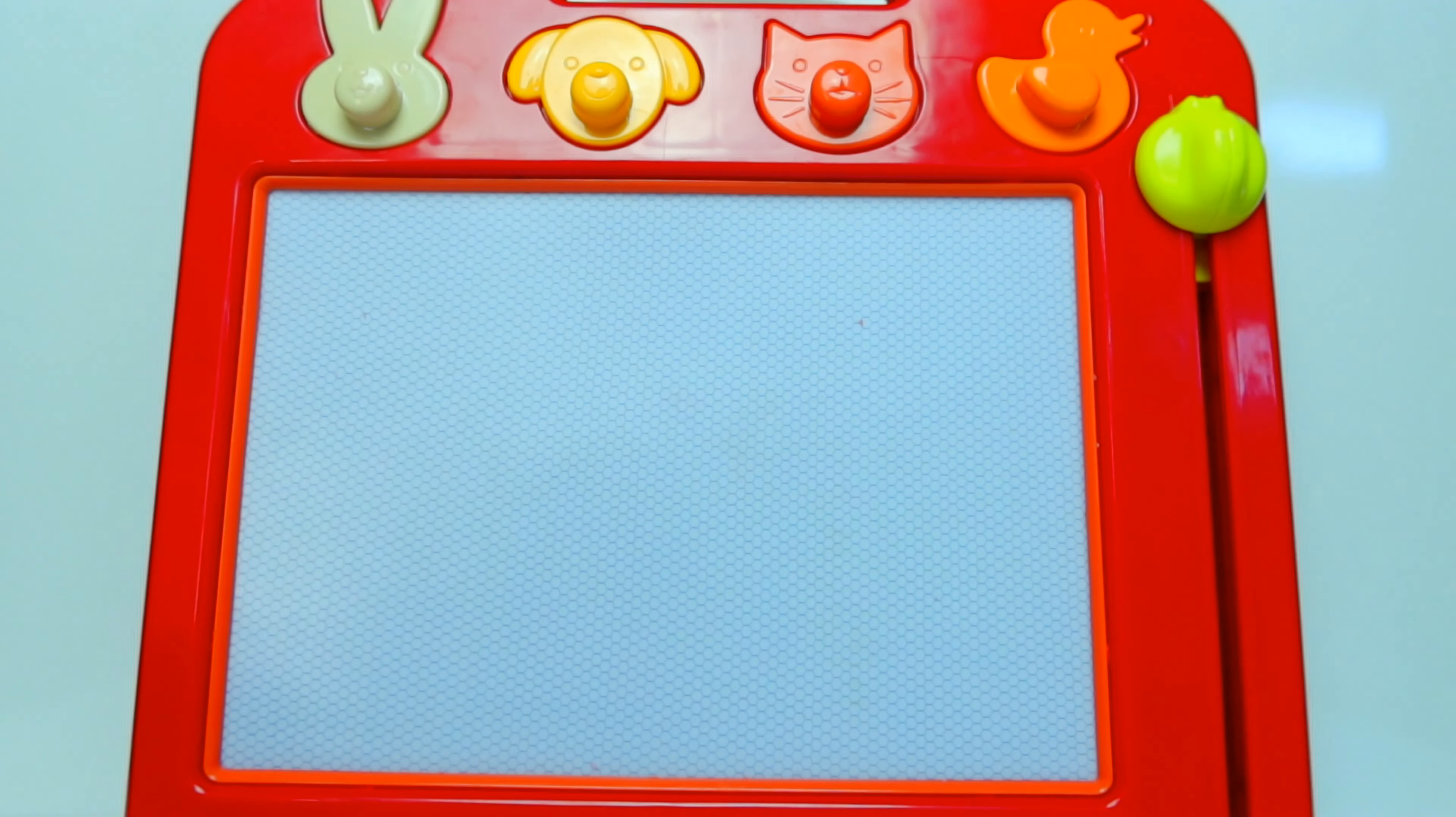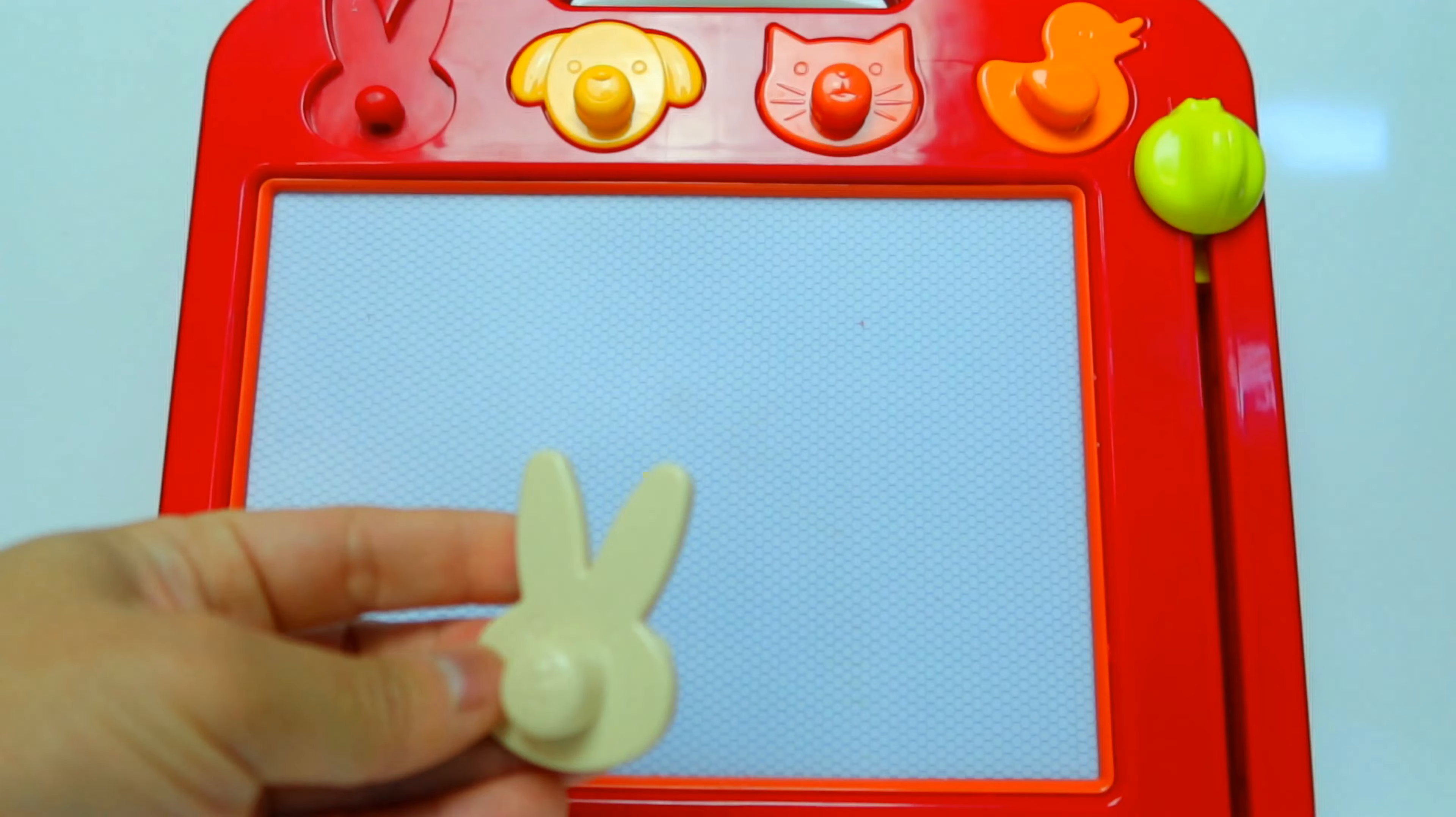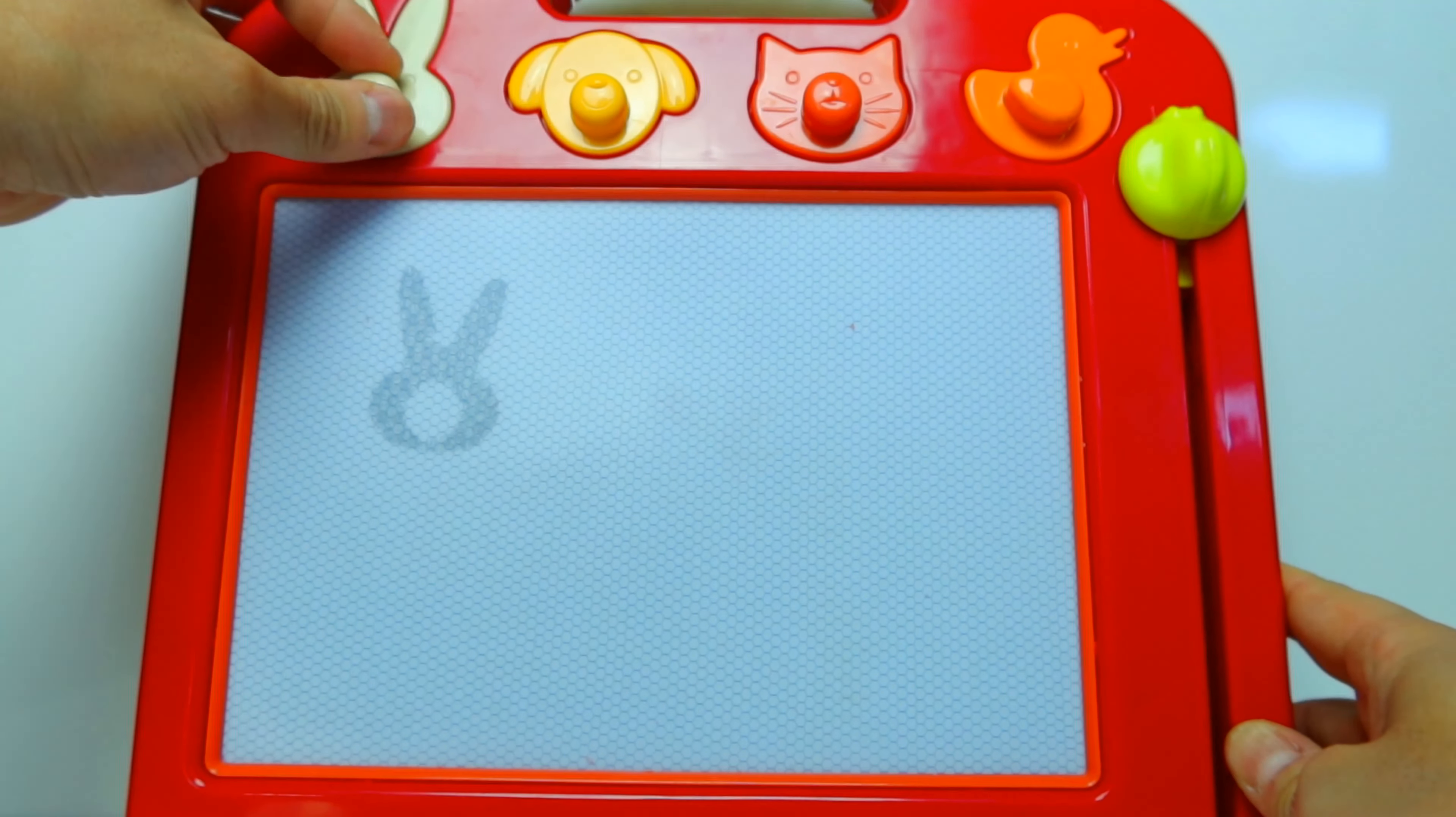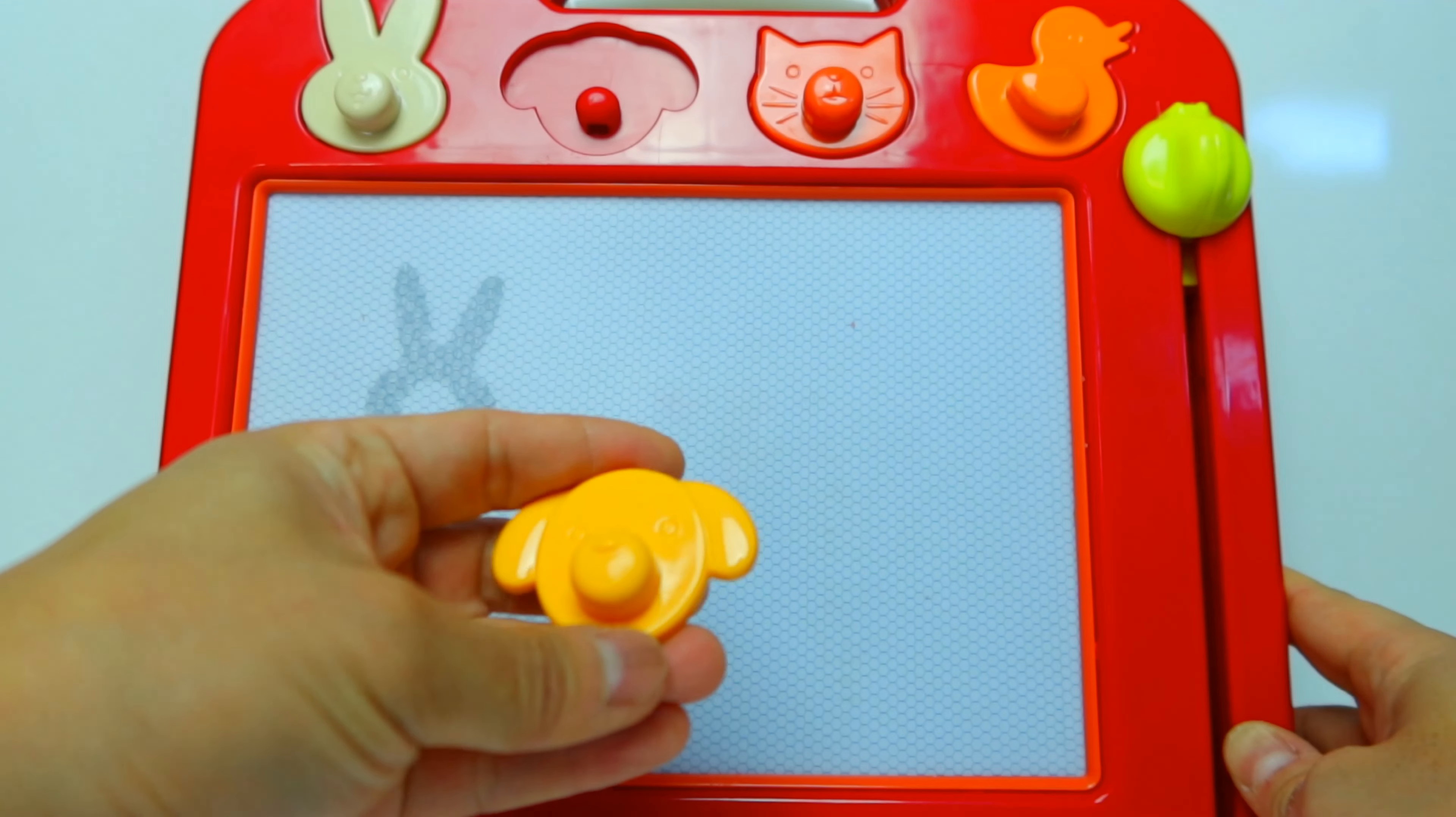I see we have four animals on the top. Let's see what they are. It's a bunny! Whoa, it's cool! Second one is a doggie.